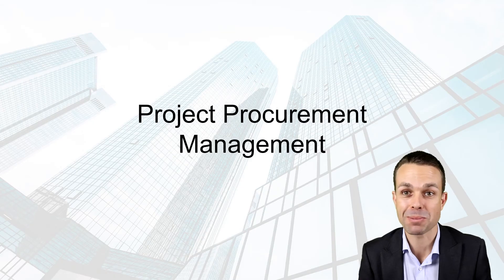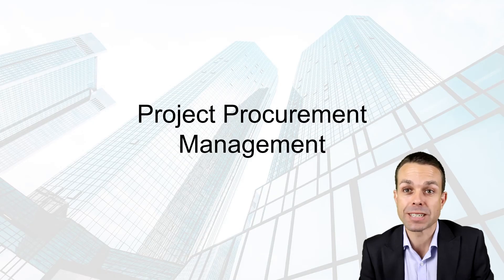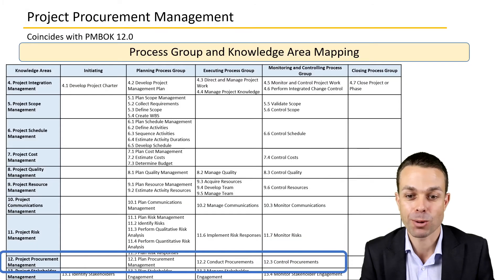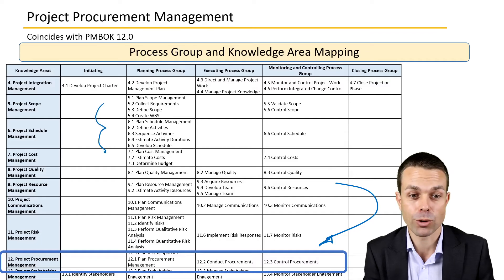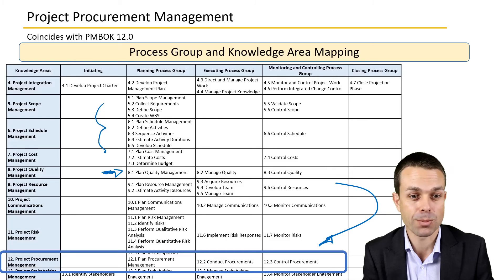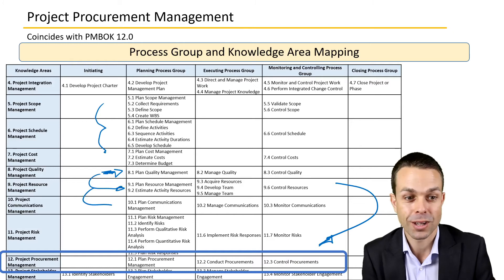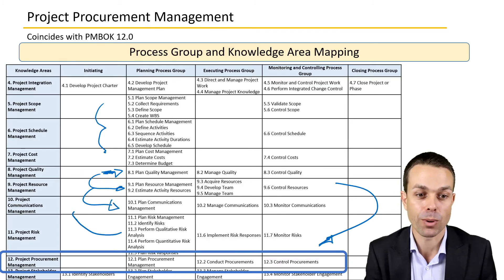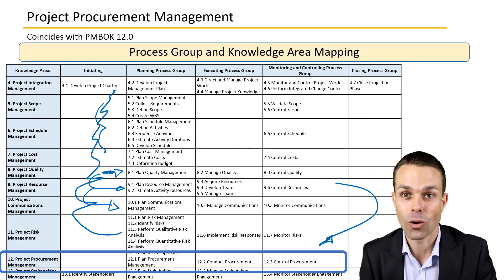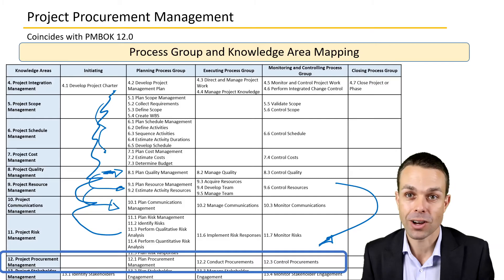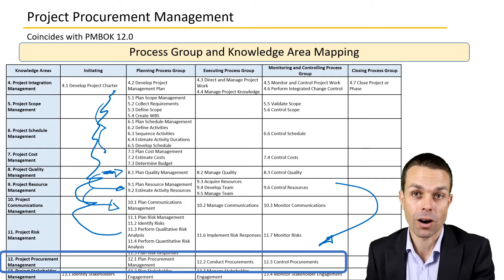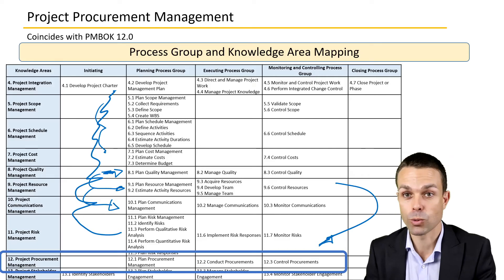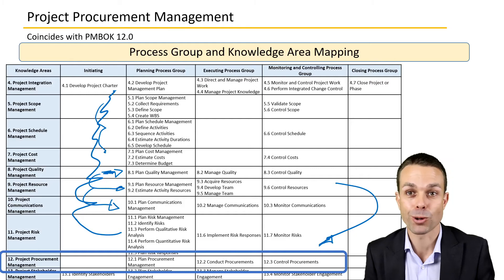Welcome back to these processes from the project management body of knowledge. We're looking at the overview for project procurement management, which fits closer to the end of our process groups. We've been through scope, schedule, cost, quality, resources, communications, and risk — and now once we know these items, we can see if we want a third party to be doing the work. That's when we might hire or form a contract with a third party to do the work for us, procuring their services or products.